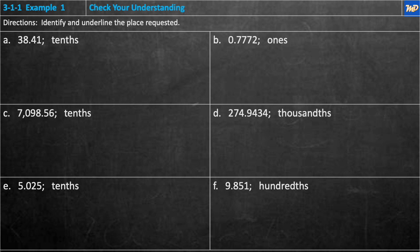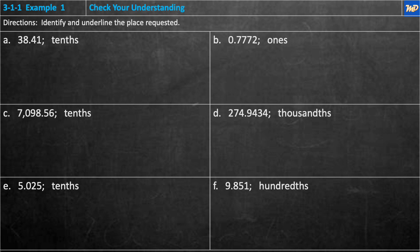Example one, check your understanding. Instructions: identify and underline the place requested. In A, 38.41 — underline the tenths place. The tenths place is the first place to the right of the decimal point, so it's the 4. In B, 0.7772 — underline the ones place. The ones place is the first place to the left of the decimal point, so it's the 0.